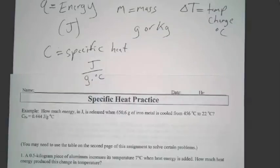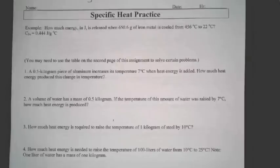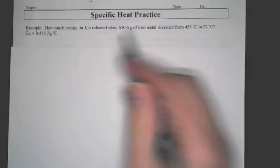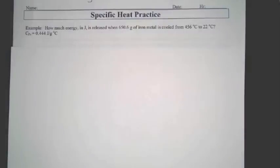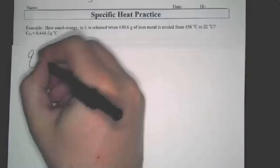Now what we're going to do with this problem is just go through, identify every variable, and then solve it. So why don't we do this? Now, you get how much energy in joules is released when 650.6 grams of iron metal is cooled from 456 degrees Celsius to 22 degrees Celsius. And then it gives us our specific heat. So this is about as straightforward as it gets. You just have to go through, and what I do, I identify every variable immediately.